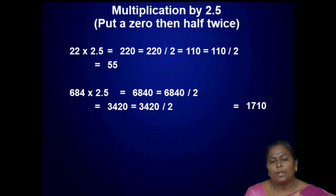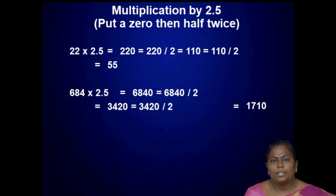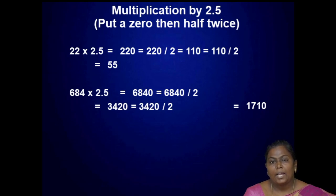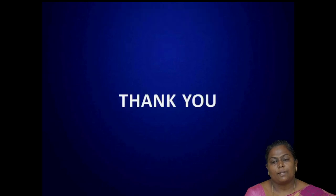Next, multiplication by 2.5: put a 0 then take half. For example, 22 into 2.5 means put a 0 to get 220, then take half.